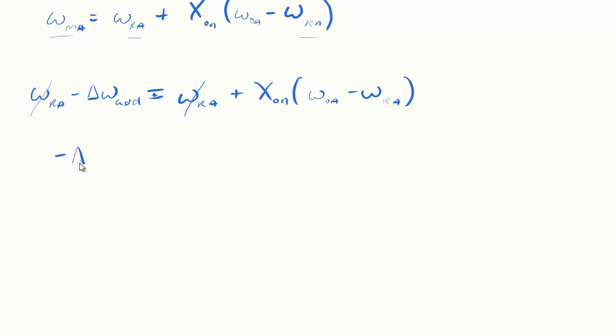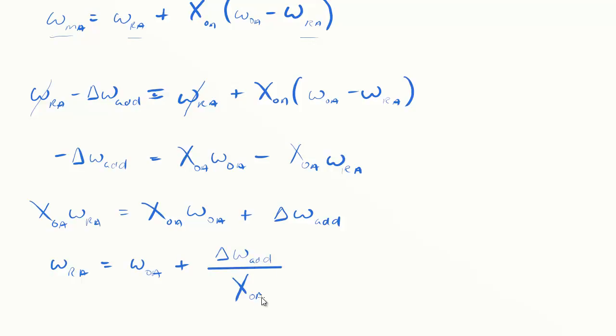Let me distribute this side out. I have minus delta omega add here, and now I have X_OA omega_OA minus X_OA omega_RA. This is the term we're trying to solve for. Taking these terms over, I have X_OA omega_RA equals X_OA omega_OA plus delta omega added from the space.